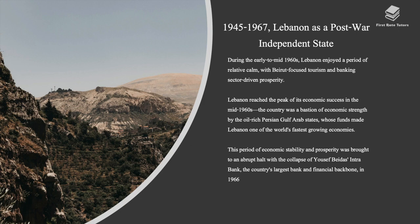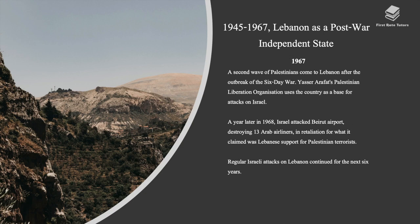This period of economic stability and prosperity was brought to an abrupt halt with the collapse of Youssef Beidas's Intra Bank, the country's largest bank and financial backbone, in 1966. In 1967, a second wave of Palestinians came to Lebanon after the outbreak of the Six-Day War. Yasser Arafat's Palestinian Liberation Organization used the country as a base for attacks on Israel. A year later, in 1968, Israel attacked Beirut airport, destroying 13 Arab airliners in retaliation for what it claimed was Lebanese support for Palestinian terrorists. Regular Israeli attacks on Lebanon continued for the next six years.